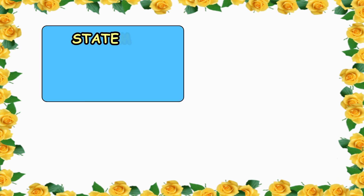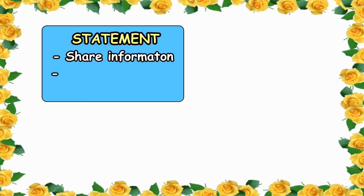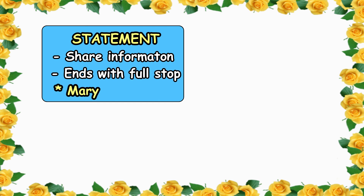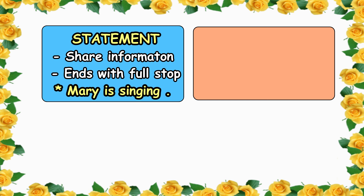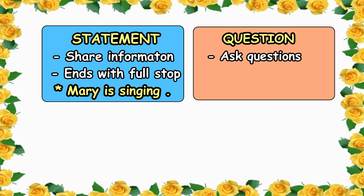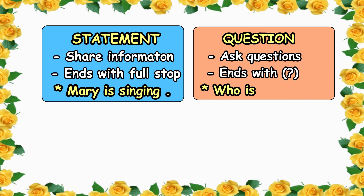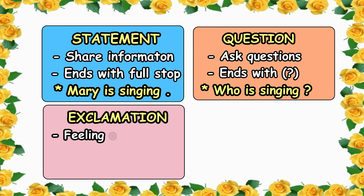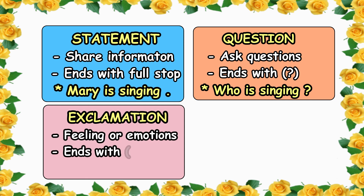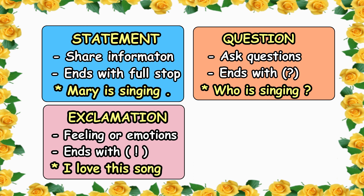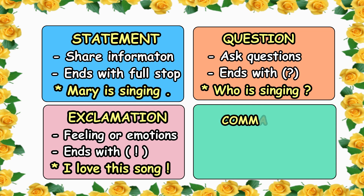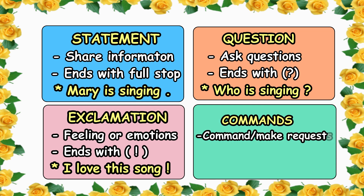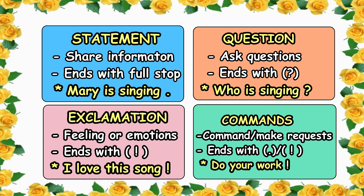So friends, let's recap today's lesson. Our first type is statement, in which we share information — it ends with a full stop, for example: Mary is singing. Our second type is question, in which we ask questions — it ends with a question mark, for example: who is singing? Our third type is exclamation, in which we show strong feeling or emotions — it ends with an exclamation mark, for example: I love this song! Our fourth type is command, in which we give commands or make requests — it ends with a full stop or exclamation mark, for example: do your work.